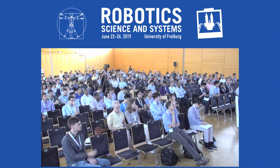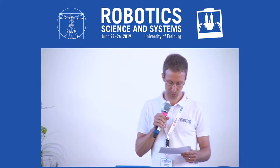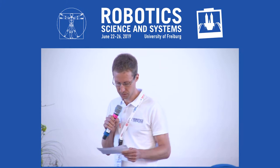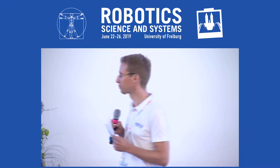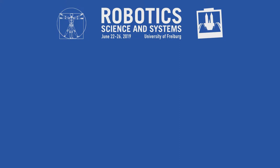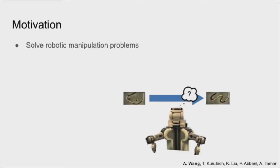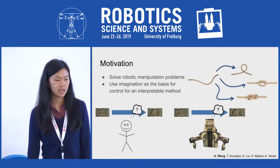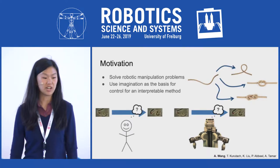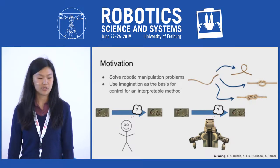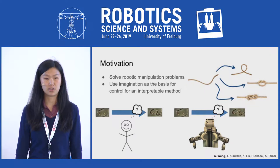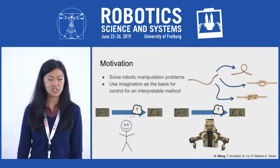The second talk in the session is 'Learning Robotic Manipulation through Visual Planning and Acting.' Our motivation is to solve robotic manipulation problems such as moving a rope from a start state to a goal state. The inspiration is that humans can vividly imagine how to solve problems like rope manipulation, and we want to transfer this skill to robots — making for an interpretable method that uses this imagination as the basis for control.